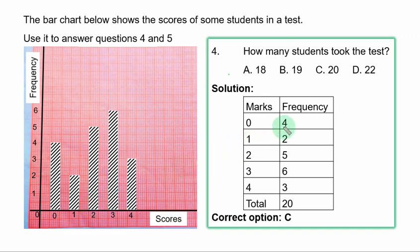Students that scored 0 marks from the bar chart, they are 4. Those that scored 1 mark, they are 2. Those that scored 2 marks, they are 5. Those that scored 3 marks, they are 6. Those that scored 4 marks, they are 3. If you add all together, you have 20. So, 20 students took the test. C is the correct option.